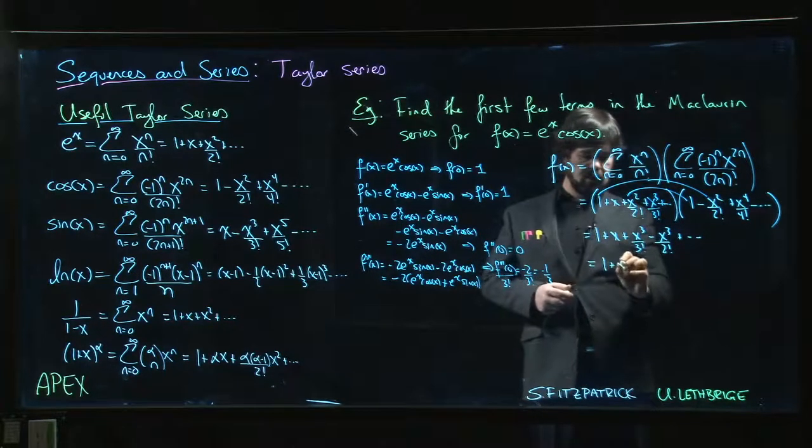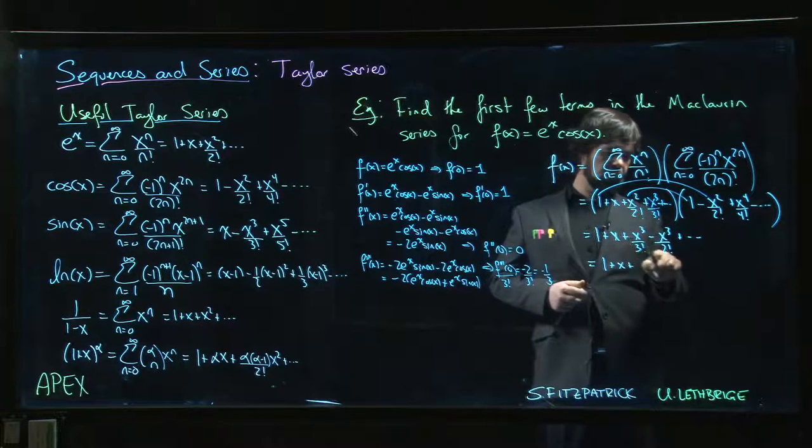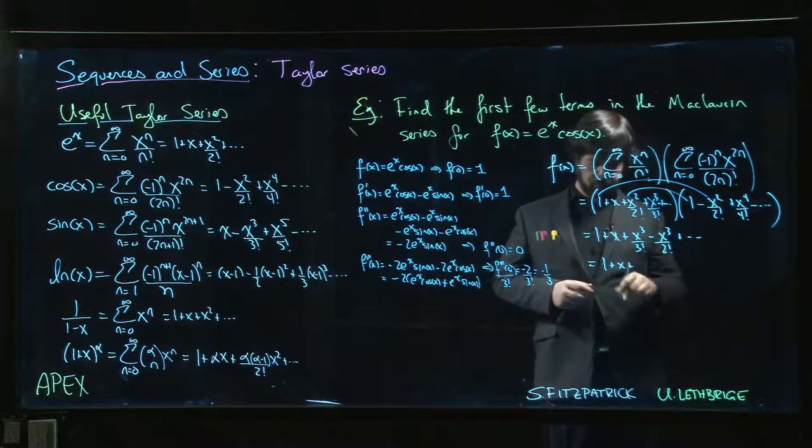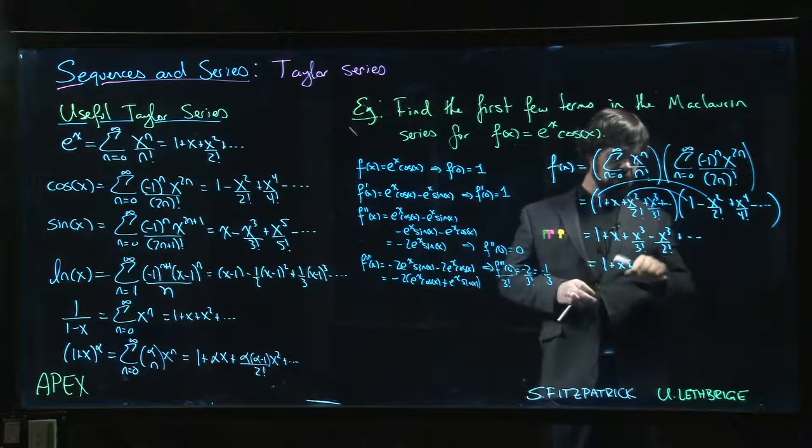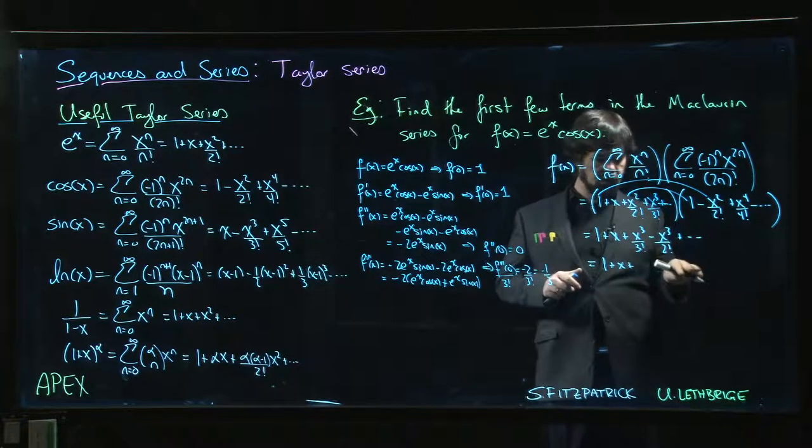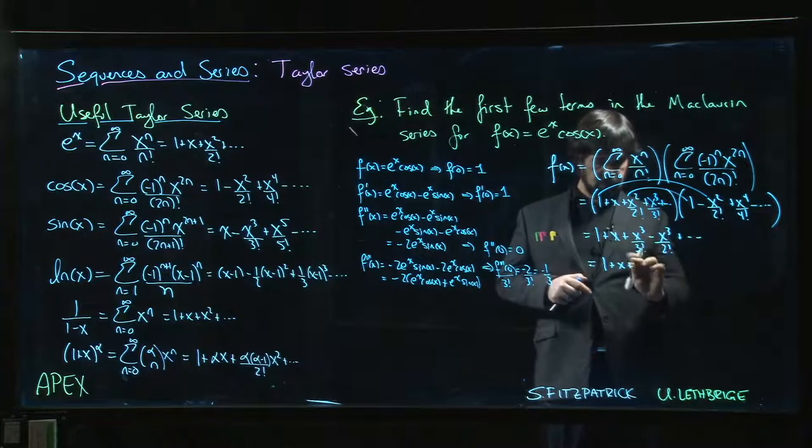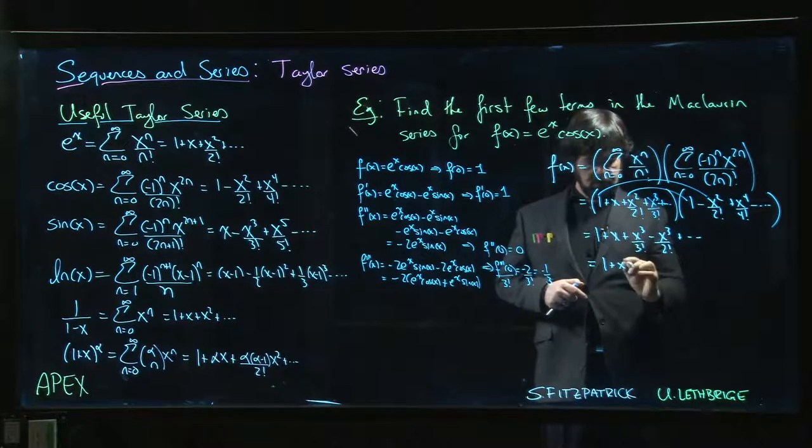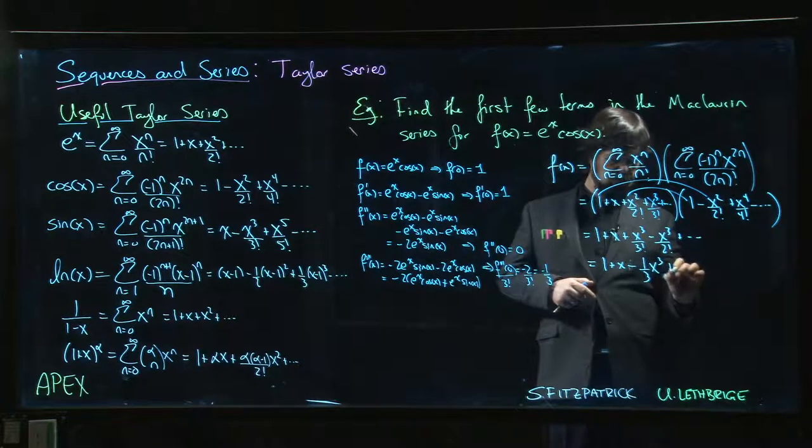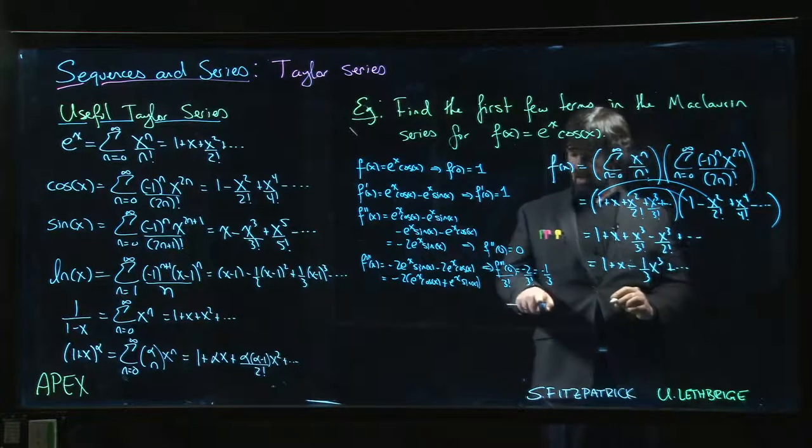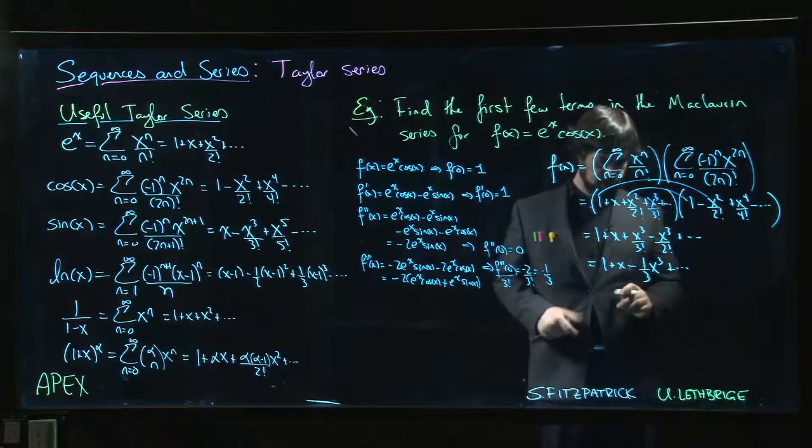So if we combine those, 1 plus x, 1 over 6 minus 1 half. So then we have 1 over 6 minus 3 over 6. We get minus 2 over 6, which is minus 1 over 3. So that should be a minus sign. Minus 1 over 3 x cubed, and so on. And yeah, it agrees with what we had over here.